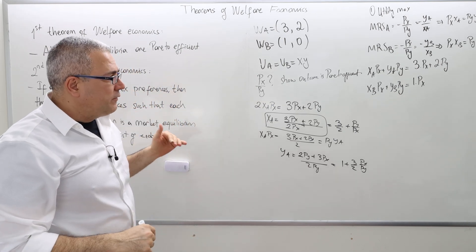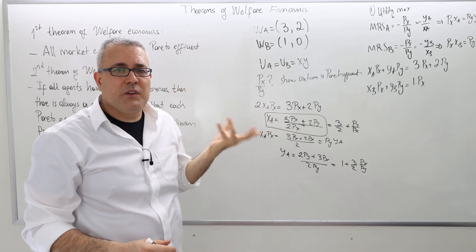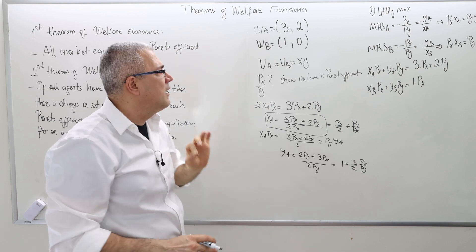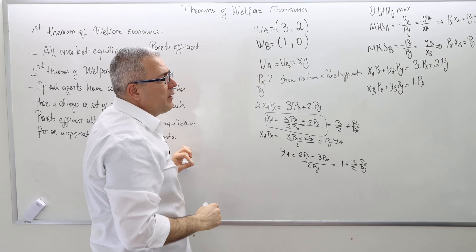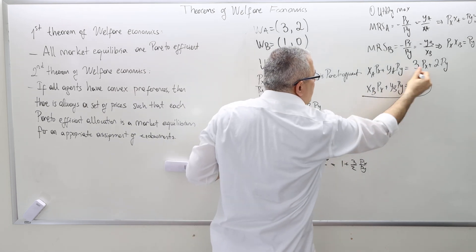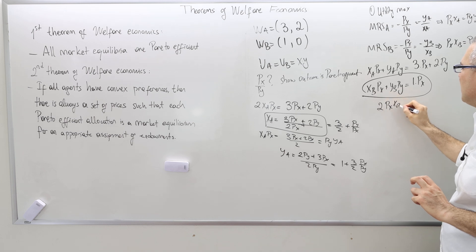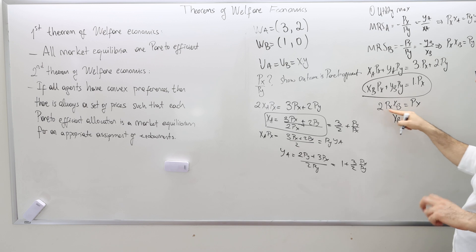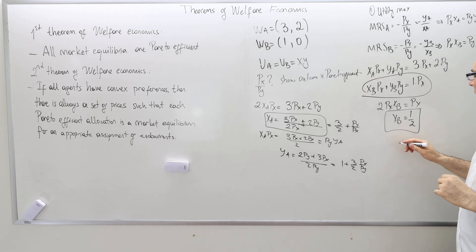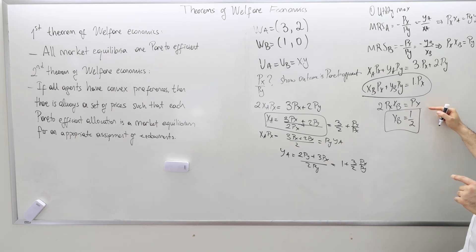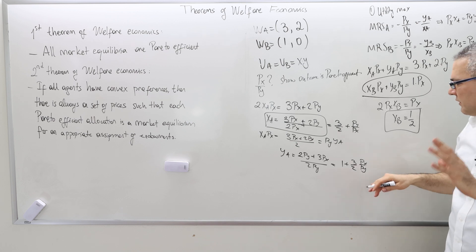For agent B, I can't just swap labels since their endowments differ. Using PX·XB = PY·YB in agent B's budget constraint gives 2·PX·XB = PX, hence XB = 1/2. This doesn't depend on the price ratio at all.